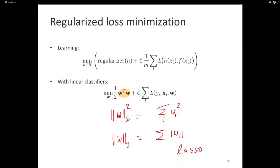LASSO is regularized regression with the L1 regularizer, which has the very interesting property that it prefers sparsity in the parameters — it prefers weights to be zero if possible. Just like the L2 regularizer prefers weights to be small but not necessarily zero. There are other regularizers also, and today in the best libraries you can just add a regularizer.